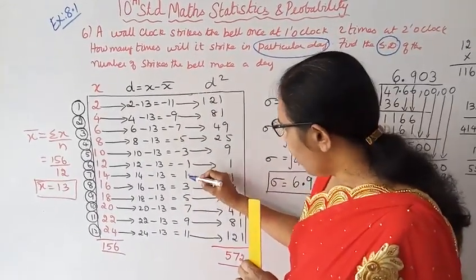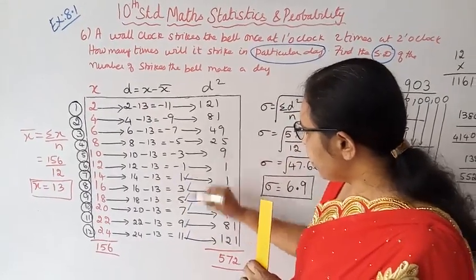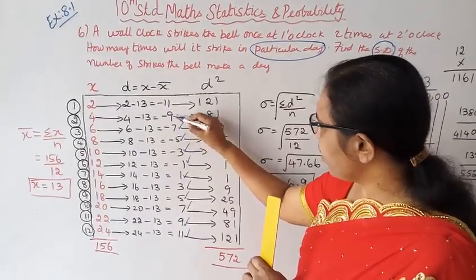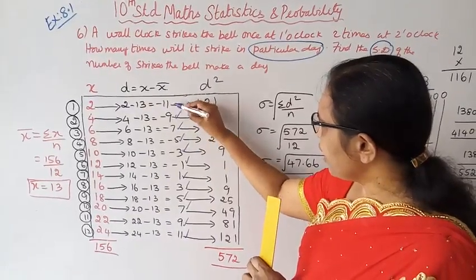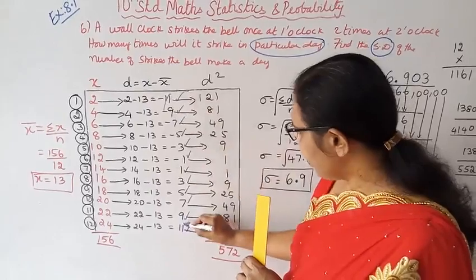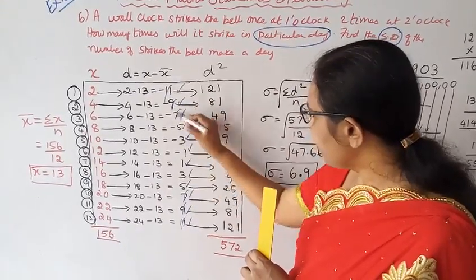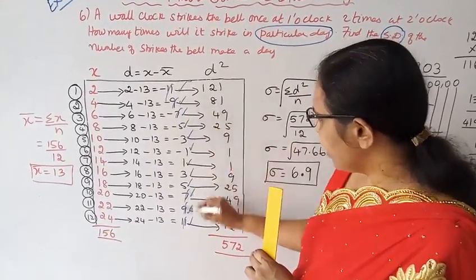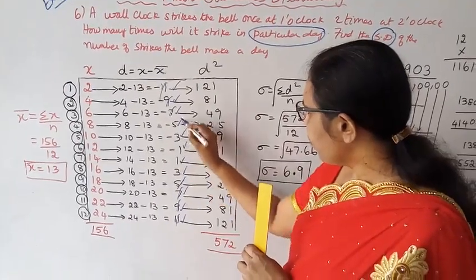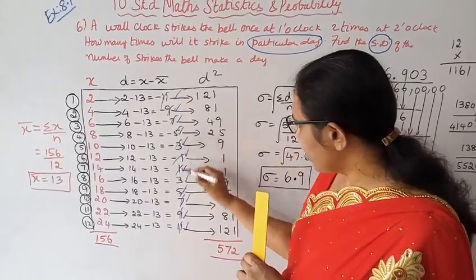The d values are: 1, 3, 5, 7, 9, 11 and minus 1, minus 3, minus 5, minus 7, minus 9, minus 11. Now 11 cancels with minus 11, 9 cancels with minus 9, 7 cancels with minus 7, plus 5 minus 5 cancel, plus 1 minus 1 cancel, minus 3 plus 3 cancel. The sum of d equals zero, which verifies our X-bar.